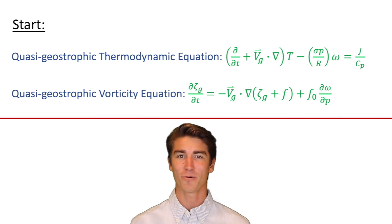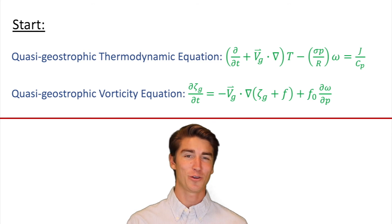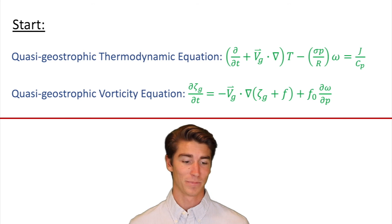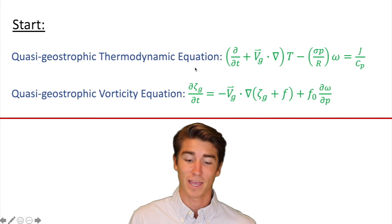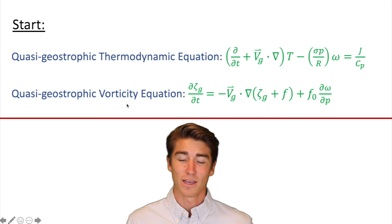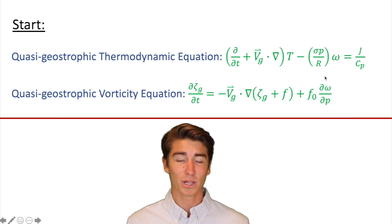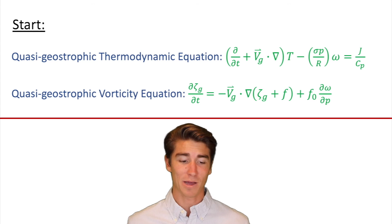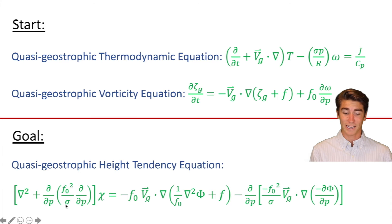If you're looking for the video that goes into the terms and symbols and explains the height-tendency equation, you can find that one on my channel. In this video we're just going to be deriving it. So how do we derive it? First we start with the quasi-geostrophic thermodynamic equation and the quasi-geostrophic vorticity equation. Basically throughout this video we're just going to be making manipulations to these two equations and then put them together, and what you end up with is the height-tendency equation. So this is our goal.